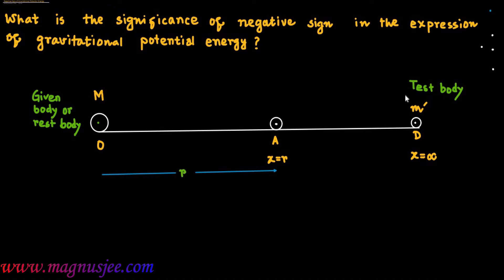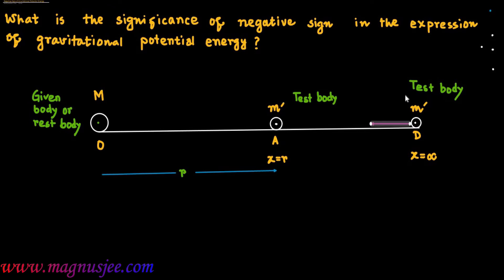Small r is the distance of point A at which the test body M' is brought. M' is the mass of the test body at point A, and the same test body is brought from point D to A — that means from infinity to point A. The gravitational potential energy of test body M' at point A is U.